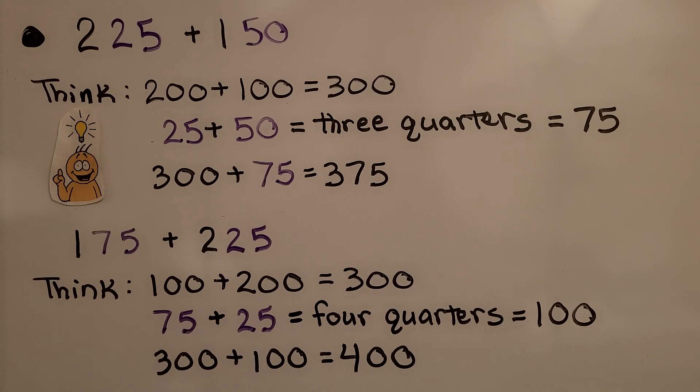If we need to add 225 plus 150, we think. 200 plus 100 is equal to 300. And 25 plus 50 is three quarters, which is equal to 75. We have 300 plus 75 is equal to 375.